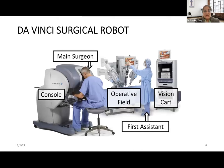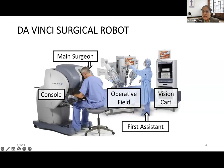The da Vinci surgical robot consists of a console where the surgeon sits and performs the surgery, a surgical side cart containing the surgical instruments which is docked onto the patient's body, and a vision cart with a monitor through which others in the OT can see the surgical field. There is also one surgical assistant positioned near the patient to assist in the surgery.